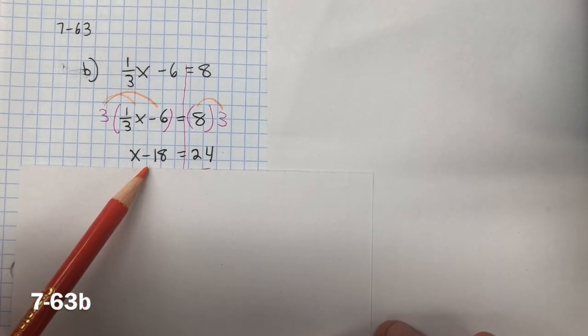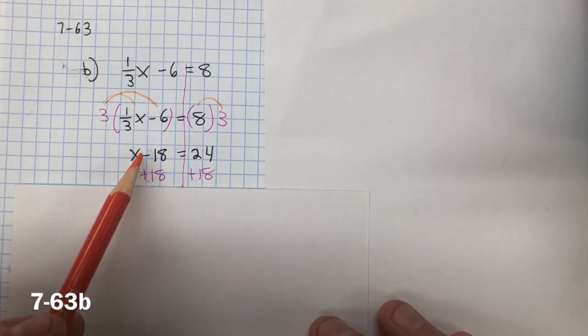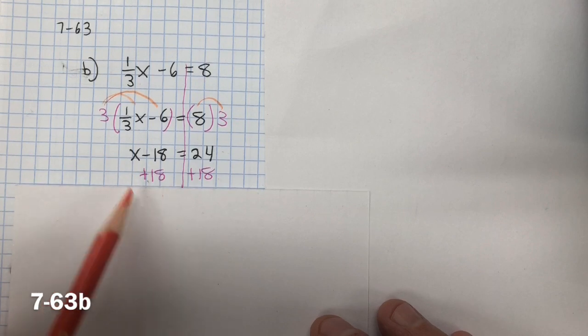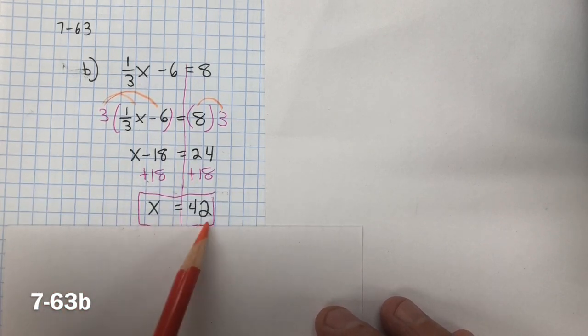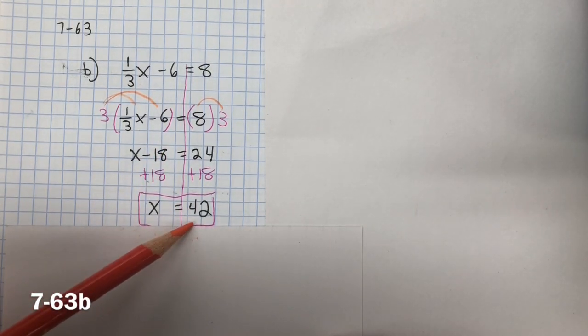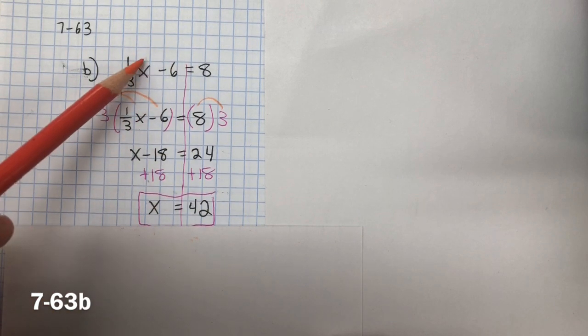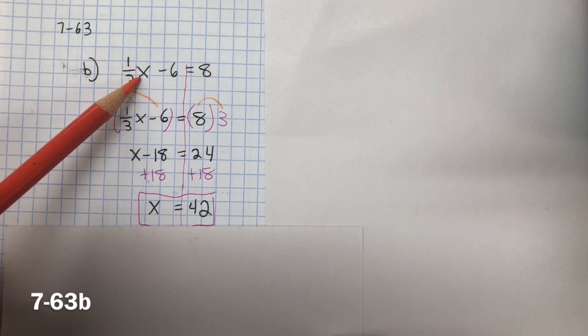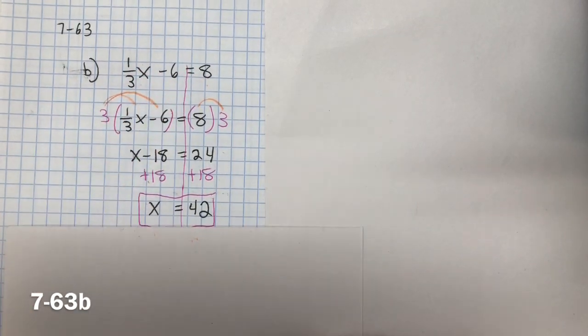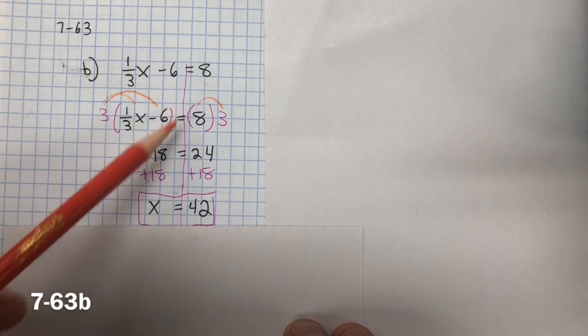Now, inverse property of subtraction is addition. So we're going to add 18 to both sides, created a zero pair. And now we have 24 plus 18 is 42, and x equals 42. Now, to check your answer, substitute 42 back into your original equation: 1 third of 42 minus 6 equals 8. If you don't get that when you substitute it back in, you made a mistake somewhere.